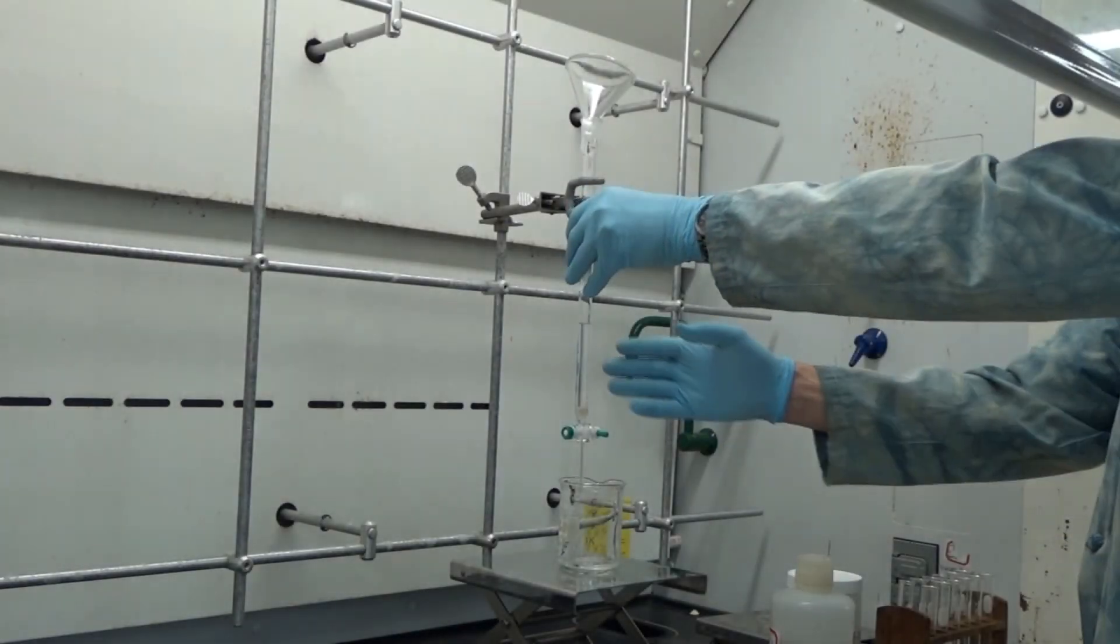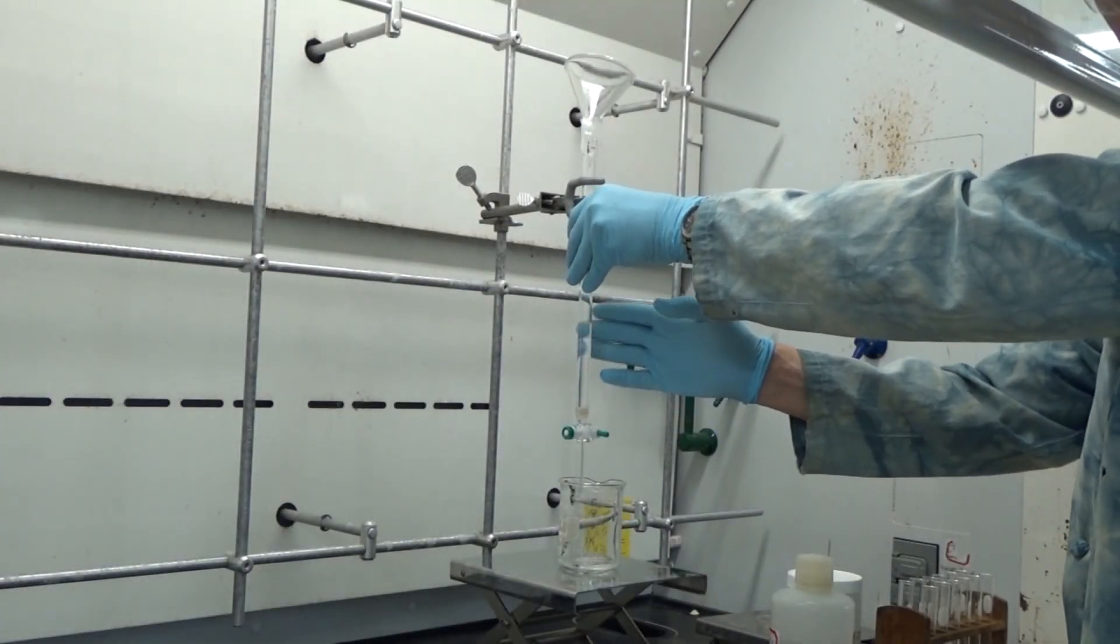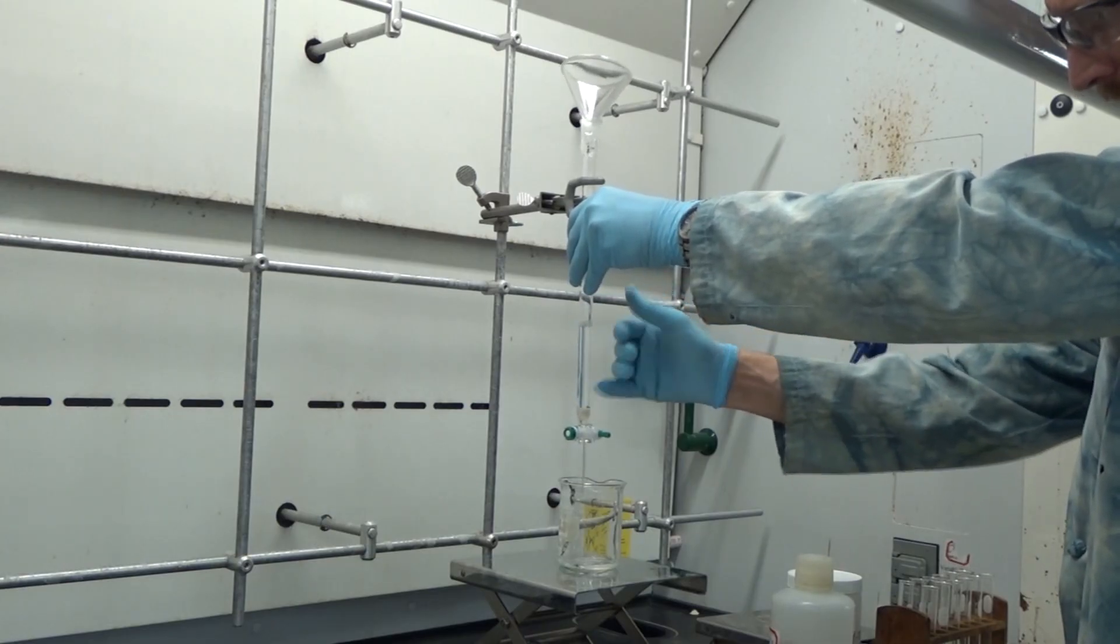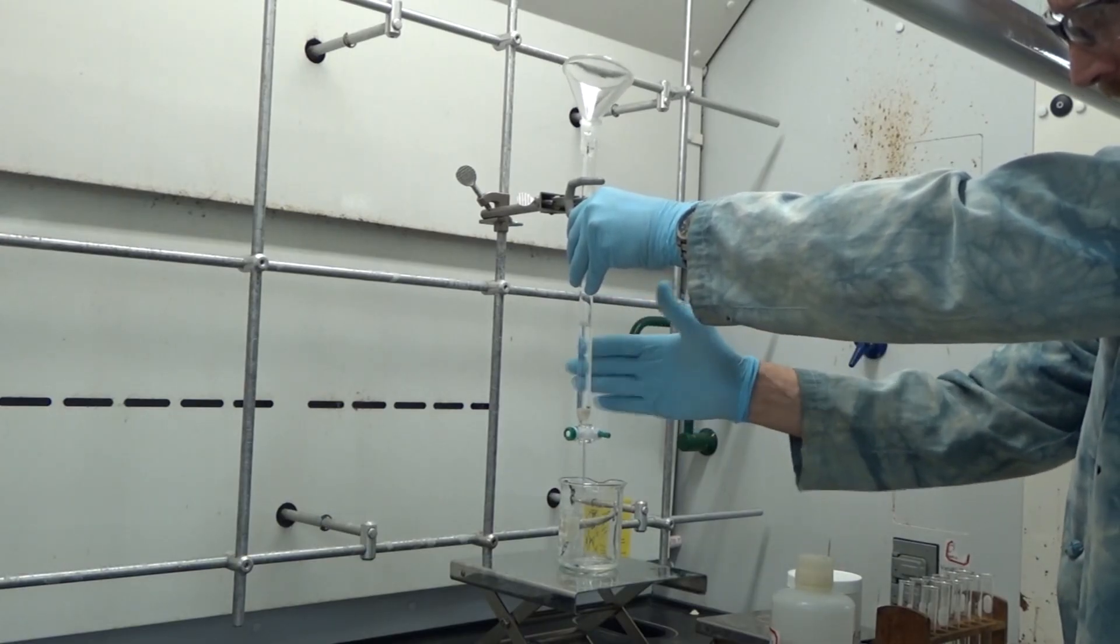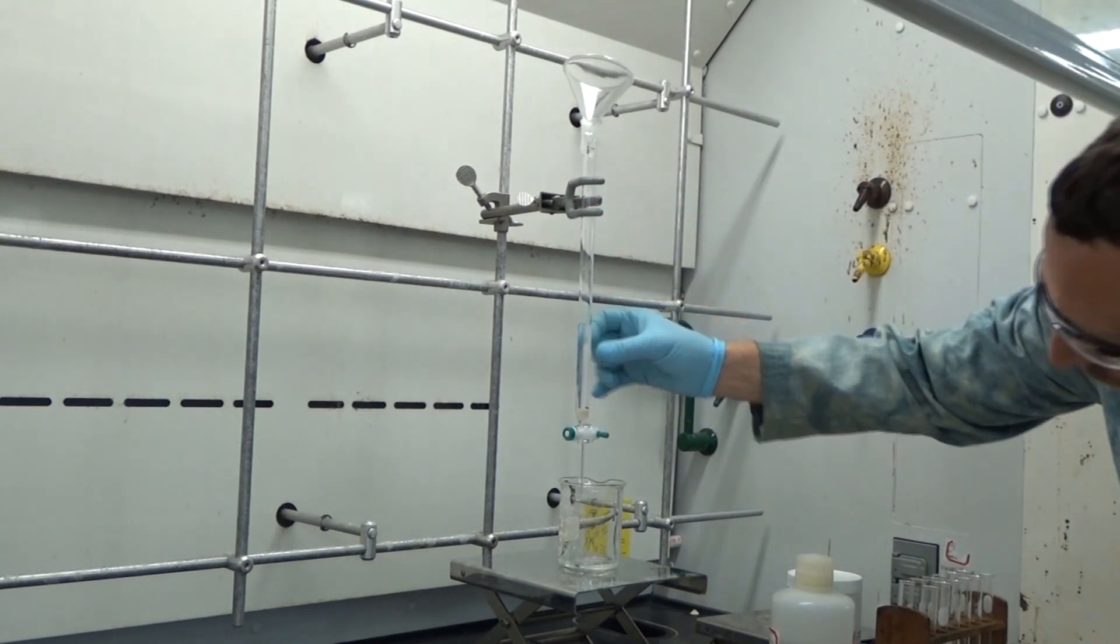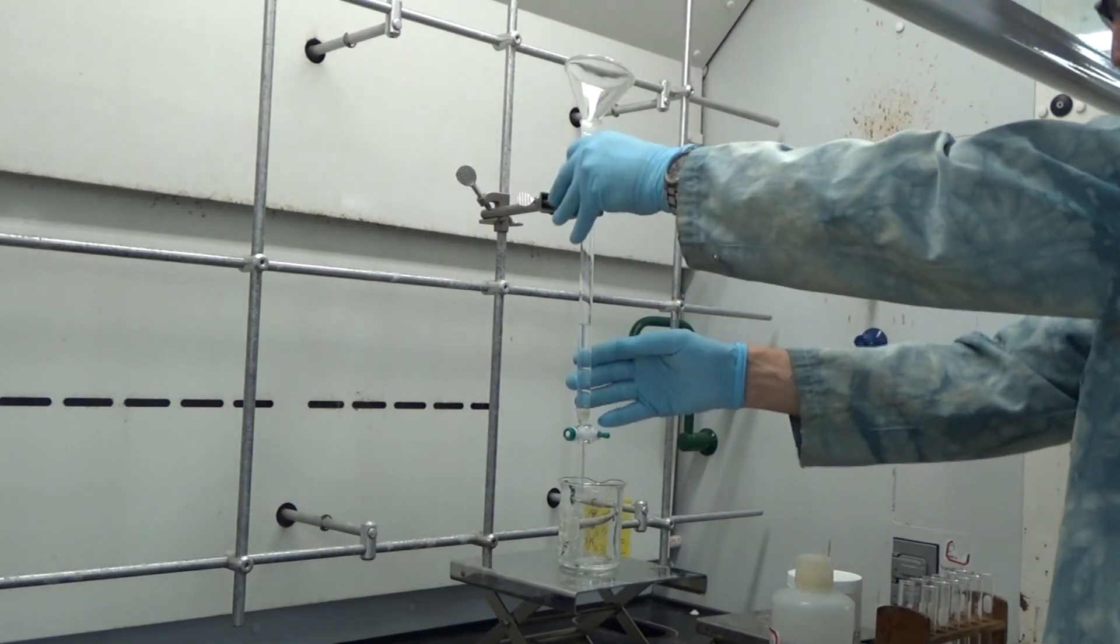At this point, people often find it helpful to give the column a little tap with an open hand. This serves two purposes. The first is it will re-level the sand that we may have disturbed when adding that first bit of our mobile phase. It also will encourage any bubbles that may break loose from that sand bed and move upward into the column to just go ahead and come loose.